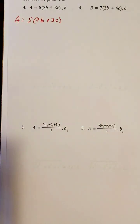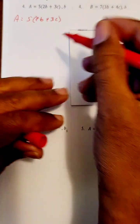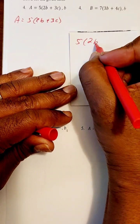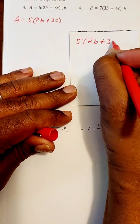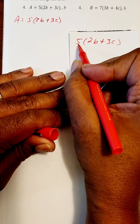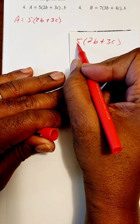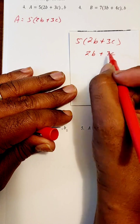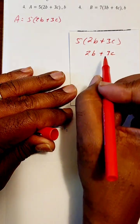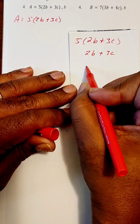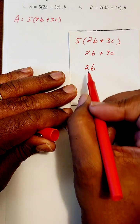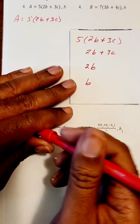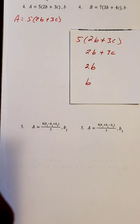So the order of isolation will be this: we have 5 times the quantity 2B plus 3C. We're going to get rid of the 5 here, which will give us 2B plus 3C. Then we'll get rid of the term 3C, which will give us 2B. Then we'll get rid of the multiplying 2, which will give us B. So this is the order that we're going to take.